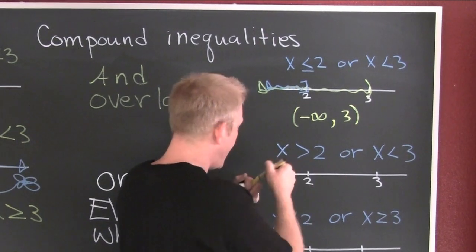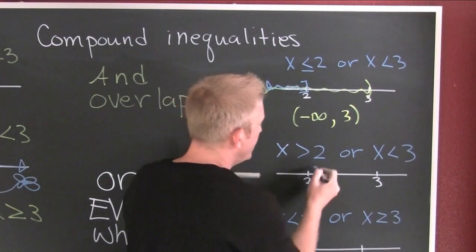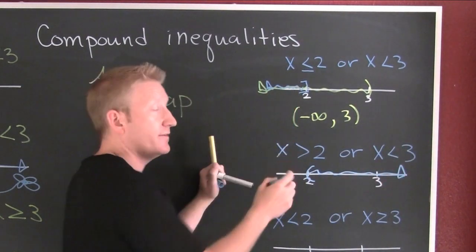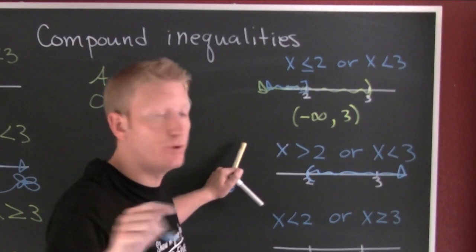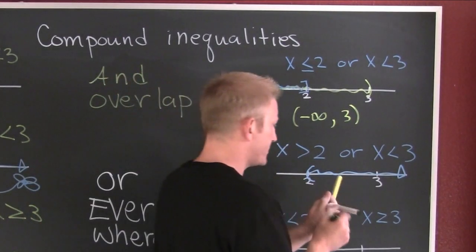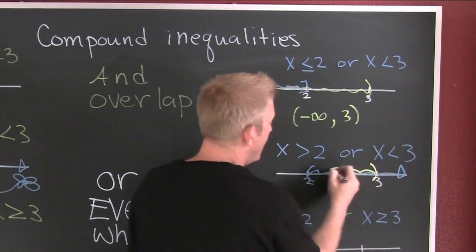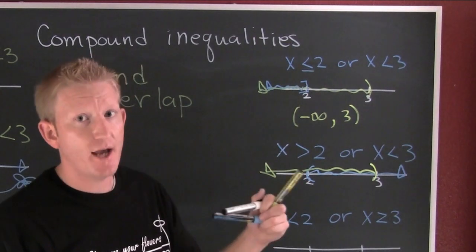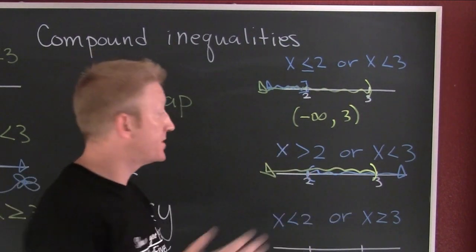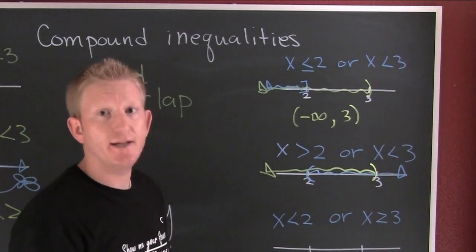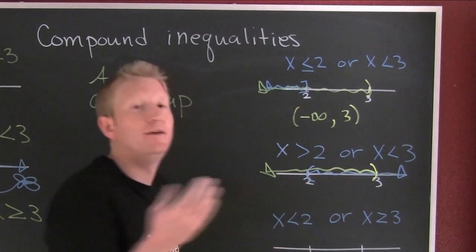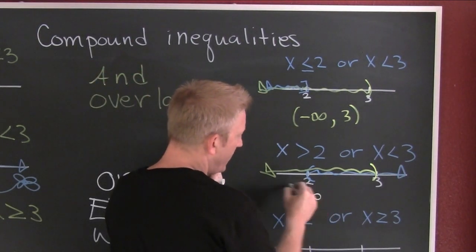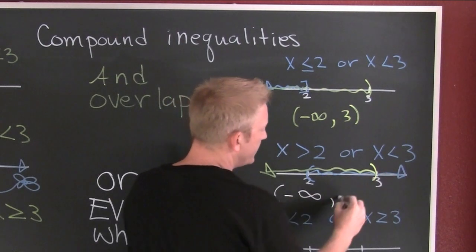On the two, I'll be shading to the right — I can shade the way the arrow goes as long as x is on the left. On the three, I shade this way too. Now I'm in the OR case — I need to write down everywhere where it's shaded. The whole thing is shaded in some way or another, but don't double count it. I'm gonna write down from minus infinity all the way up to and including infinity.